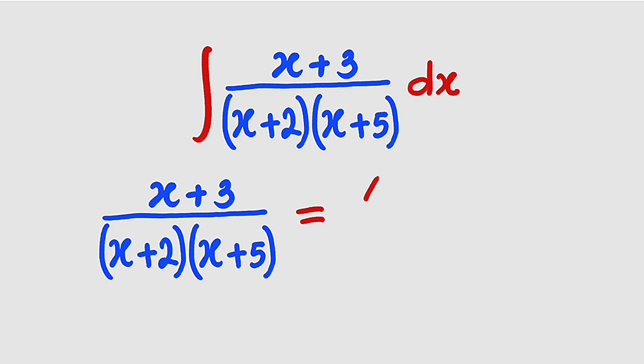To the top, we have a constant. To the bottom, we have the first factor, which is x+2, plus another constant b, divided by x+5.